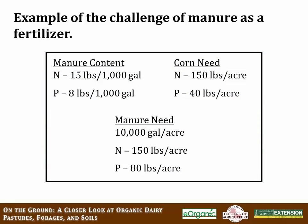Here's just an example of manure content. There's 15 pounds of nitrogen available per thousand gallons, and then there's eight pounds of phosphorus available. Your corn requires 150 pounds of nitrogen per acre and only requires 40 pounds of phosphorus. To meet the nitrogen demands of the corn — 150 pounds per acre — you need to apply 10,000 gallons of manure per acre. At 15 pounds per thousand gallons, you get 150 pounds of nitrogen. But then you also apply 80 pounds of phosphorus, and you only needed 40.